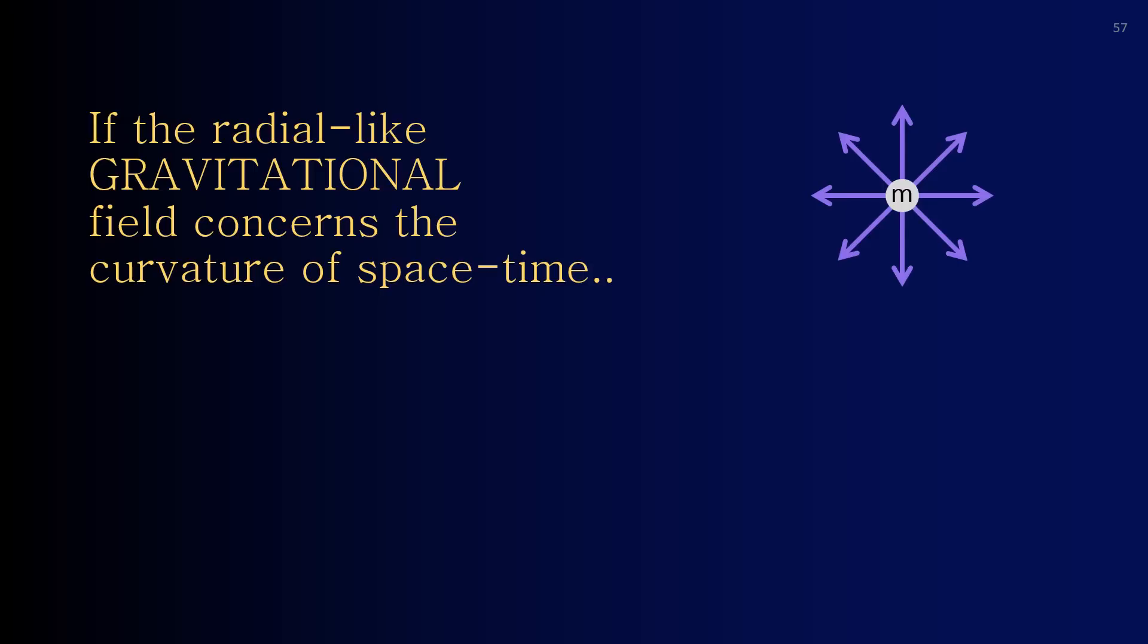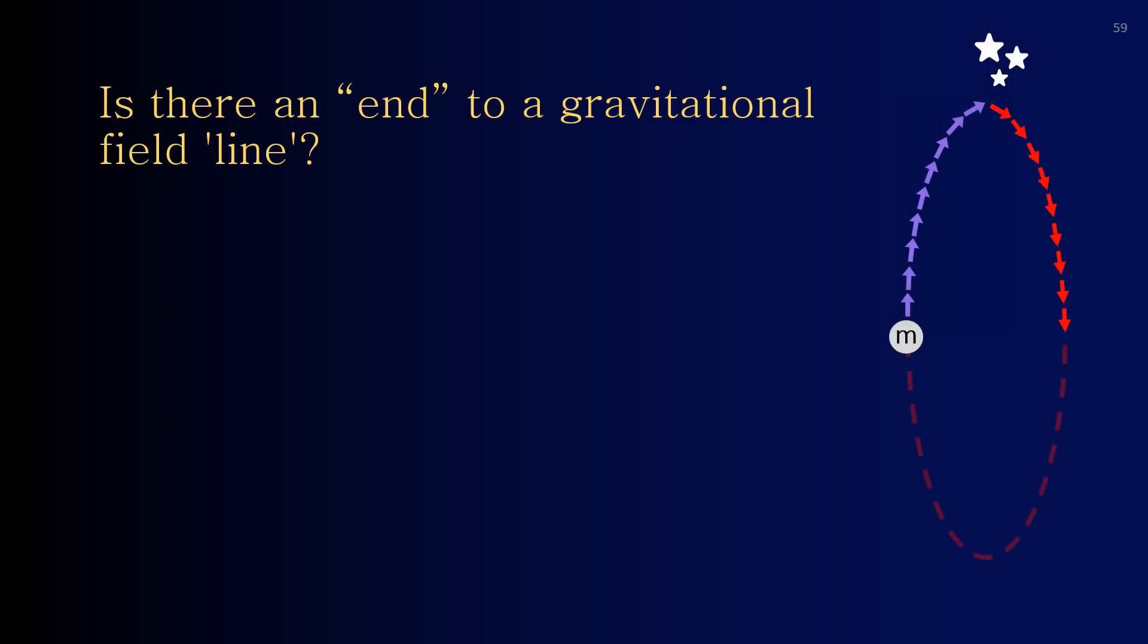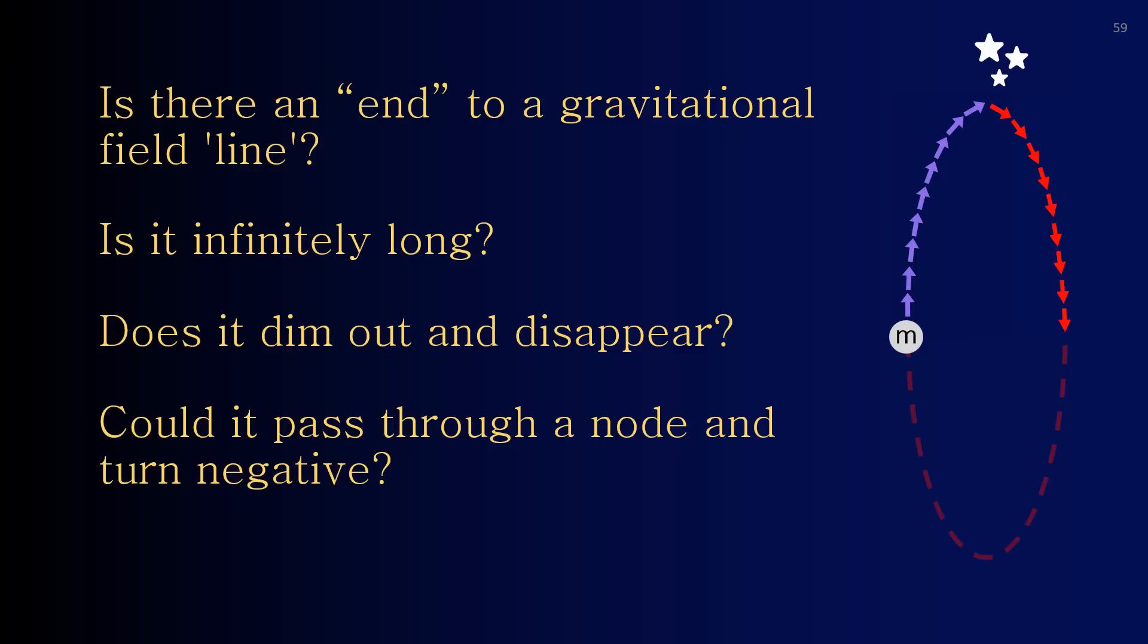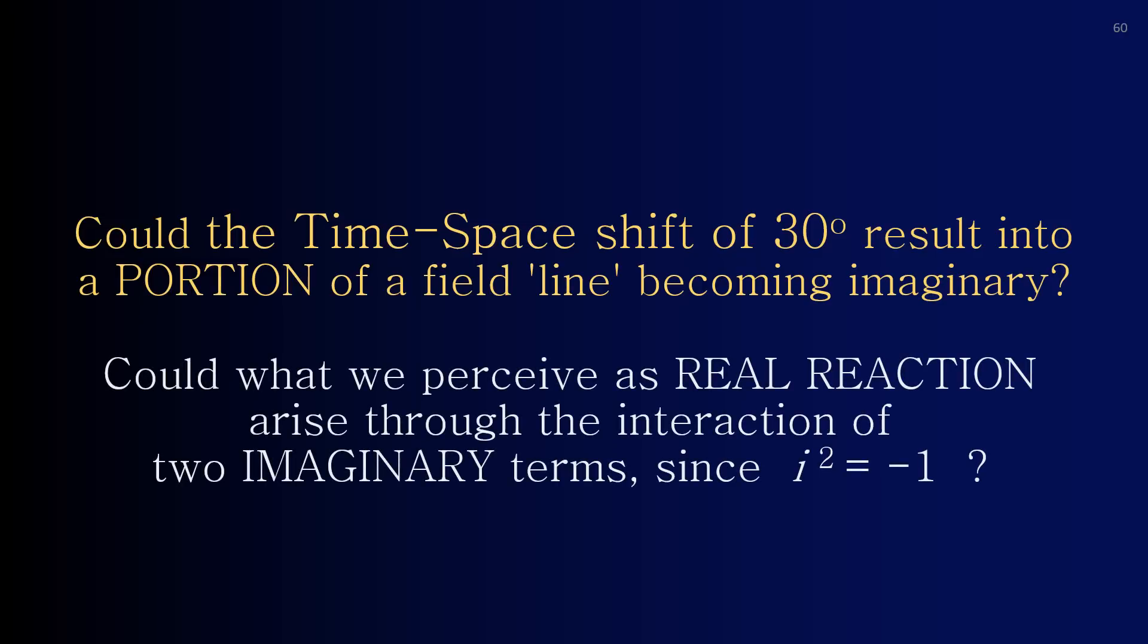If the radial-like gravitational field concerns the curvature of spacetime, shouldn't the radial-like electric field concern an analogous curvature, spacetime-related? Is there an end to a gravitational field line? Is it infinitely long? Does it dim out and disappear? Could it pass through a node and turn negative? Could it turn imaginary? Could the time-space shift of 30 degrees result into a portion of a field line becoming imaginary? Could what we perceive as real reaction arise through the interaction of two imaginary terms, since i-squared equals minus one?